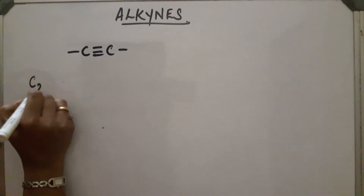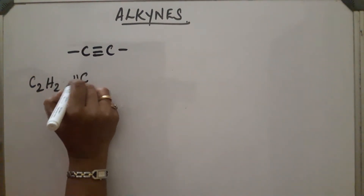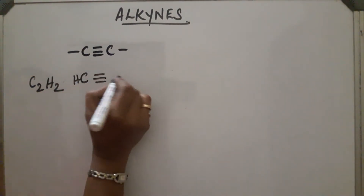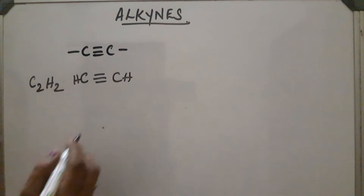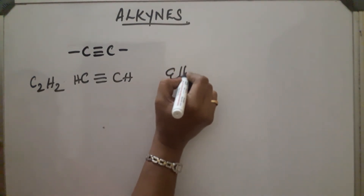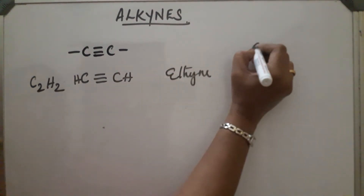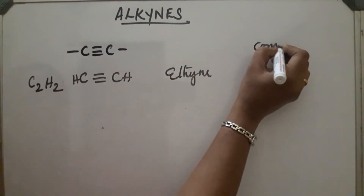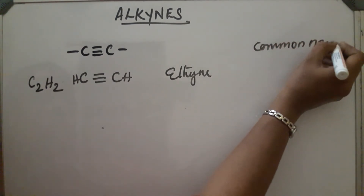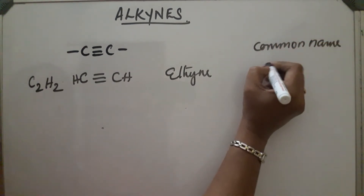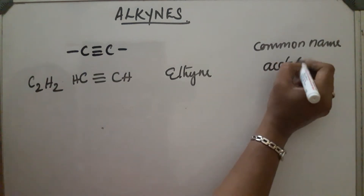C₂H₂: the first member has the structure HC≡CH. Its IUPAC name is ethyne and its common name is acetylene.